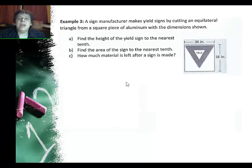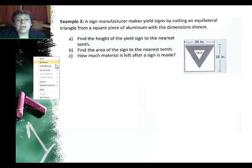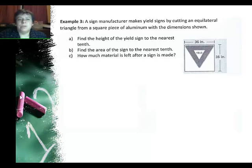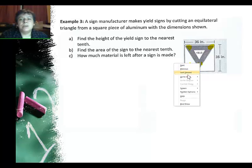In example 3, we have a sign manufacturer makes yield signs by cutting an equilateral triangle from a square piece of aluminum. So the square is 36 by 36. And we know that the base of this triangle is 36 because it takes the whole side. And they want to know how tall is this sign. Well, it's an equilateral triangle. So that tells me something about the angles. The angle here, and right here, and right here are all equal. And for a triangle, that will actually be 60 degrees if you remember your equilateral triangles.